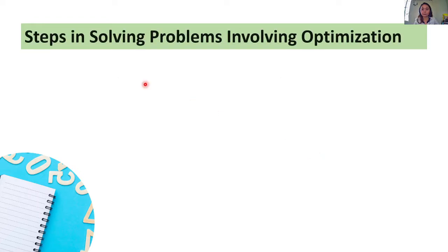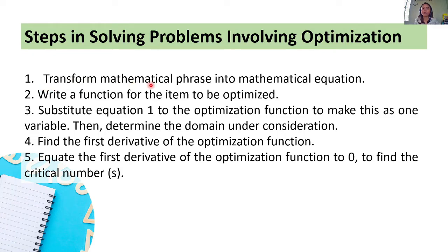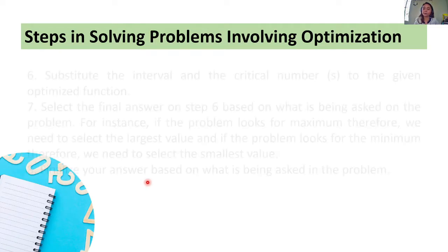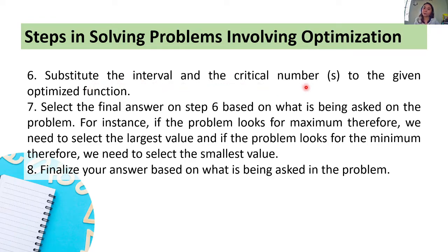Let's give some examples, class. But first, let's go through the steps in solving problems involving optimization. First step: transform the mathematical phrase into a mathematical equation. Second: write a function for the item to be optimized. Third: substitute equation 1 into the optimization function to make it a single variable, then determine the domain under consideration. Fourth: find the first derivative of the optimization function. Fifth: equate the first derivative to zero to find the critical number or numbers. Sixth: substitute the interval endpoints and the critical number into the optimization function.